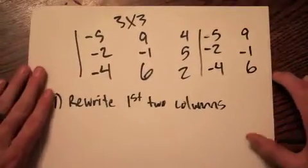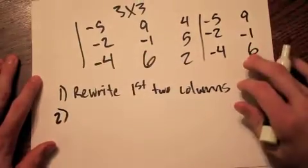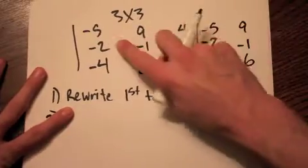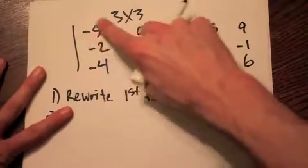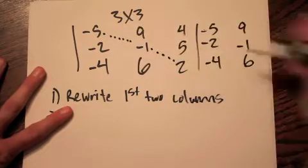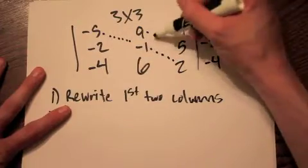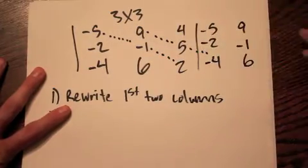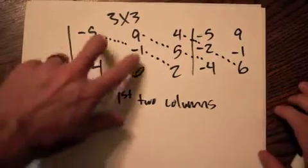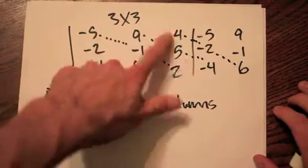Why we do that is because our second step is we're going to draw diagonals from our uppermost left-hand element. So right here, this negative 5, top left corner, we're going to draw diagonals, each one containing three elements. So negative 5 to negative 1 to 2, 9 to 5 to negative 4, and then 4 to negative 2 to 6. Three diagonals — 3 by 3, three diagonals, each with three numbers in them. Three is a very popular theme in this.